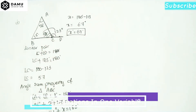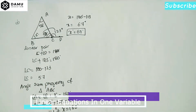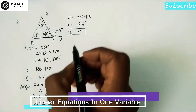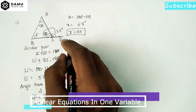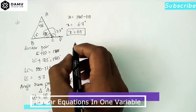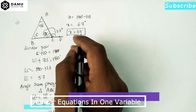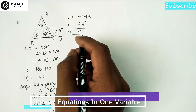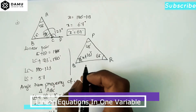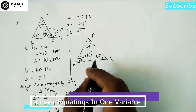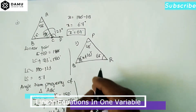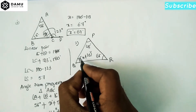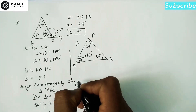If we add all these values we will get 180 degrees. Now for the second question, we need to find what the x value is.